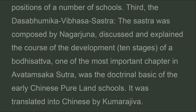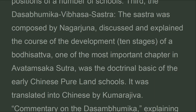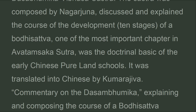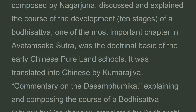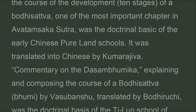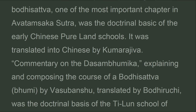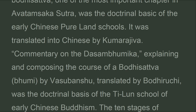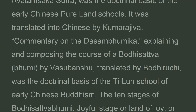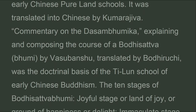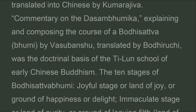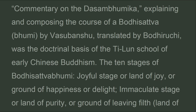The Dasabhumaka Vibhasa Sastra discussed one of the most important chapters in the Avatamsaka Sutra and was the doctrinal basis of the early Chinese Pure Land schools. It was translated into Chinese by Kumarajiva. A commentary on the Dasabhumaka explaining the course of a bodhisattva, by Vasubandhu and translated by Bodhiruci, was the doctrinal basis of the Ti-lun school of early Chinese Buddhism.